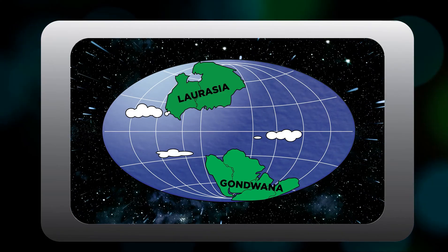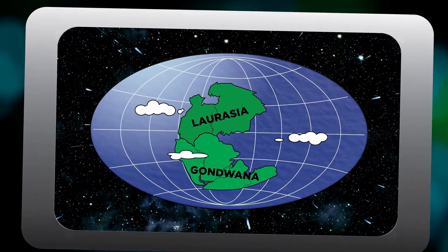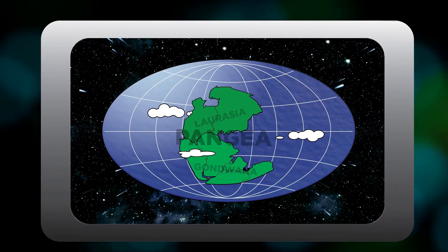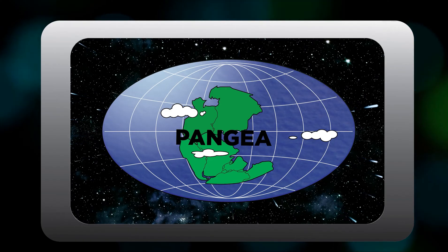Two huge land masses, Gondwana and Laurasia, approach one another. A supercontinent named Pangea was formed when North America collided with Africa and South America.